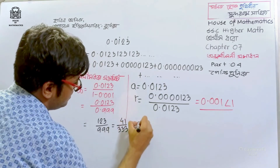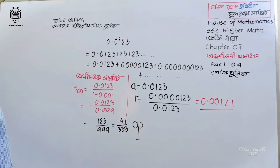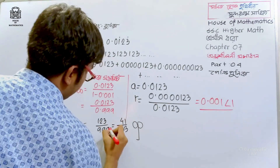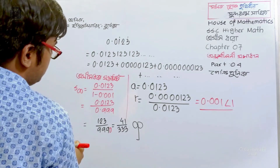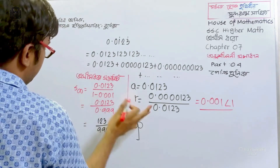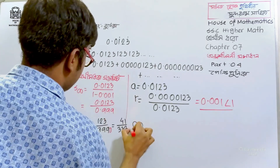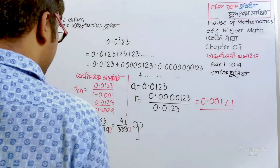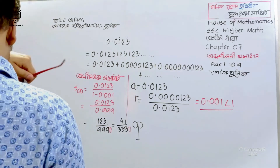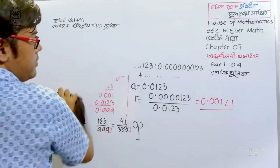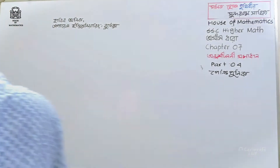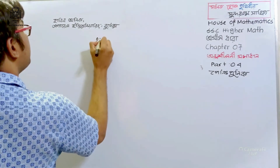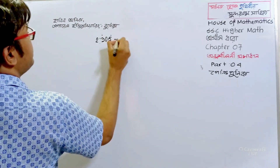All right. So this is what we have to write: 1.0123. All right. So this is what we have to write: 1.0123. All right. So this is what we've done: 1.0123. All right, so this will be written.